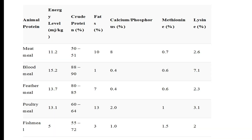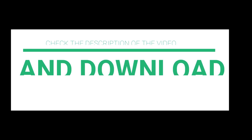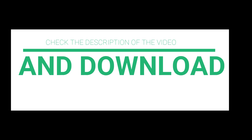For animal protein sources — meat meal, blood meal, feather meal, poultry meal, and fish meal — each has its own crude protein, energy level, fat, calcium, phosphorus, methionine, and lysine content. These are already established figures from the laboratory. Check the description of this video for the full crude protein content of all these ingredients, including the non-conventional ones, as this will help you formulate your own quality and cost-effective feed. Thank you and see you in the next video.